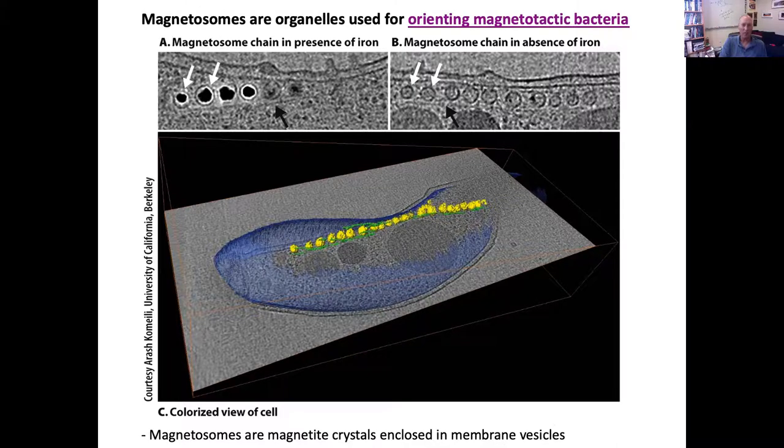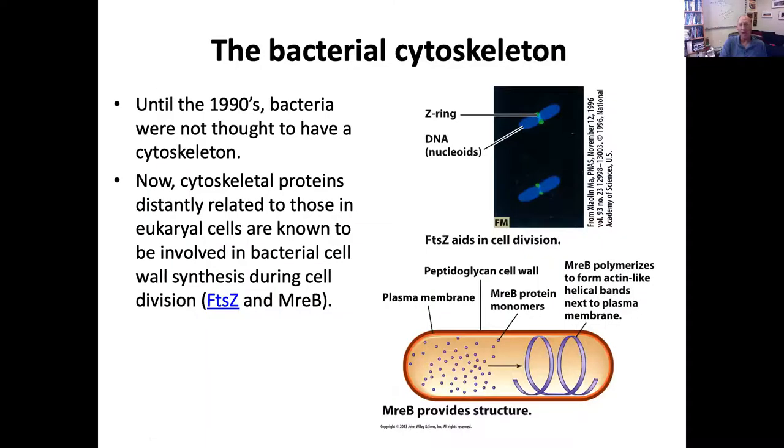So why am I talking about this now? Well, for one thing, because there are organelles that are found in the cytoplasm, and it's going to connect to this discussion now, which is the bacterial cytoskeleton. Now, the bacteria were not even thought to have a cytoskeleton. In fact, you may have learned when you were learning cell biology earlier that this is a feature of eukaryotic cells because it's necessary to organize the complex structures and all the different organelles in eukaryotic cells.